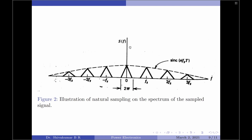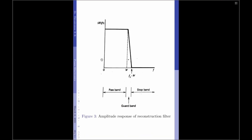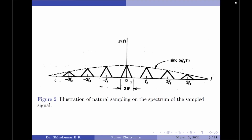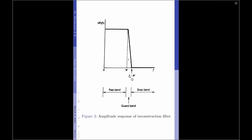To recover the original signal G(t) from the sampled signal S(t) without any distortion, we need to pass the sampled signal through an ideal low-pass filter. This filter must have an amplitude response that is flat in the pass band, decreasing in the guard band, and ideally zero in the stop band. By passing our sampled signal, which spans −W to +W, through this low-pass reconstruction filter, it is possible to recover the original signal G(t) without any distortion. We finally conclude that the use of sampling pulses of finite duration has no important effects on the sampling process. That concludes the discussion on natural sampling.